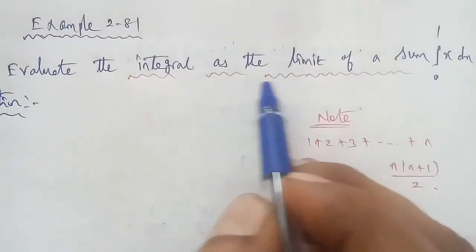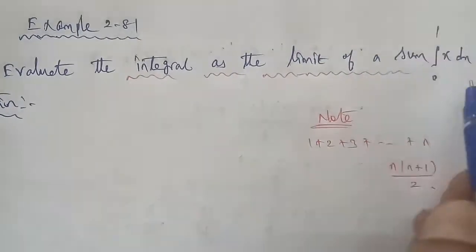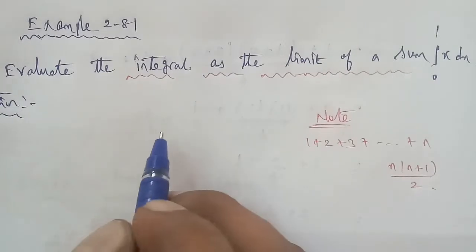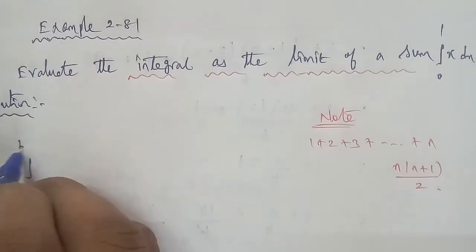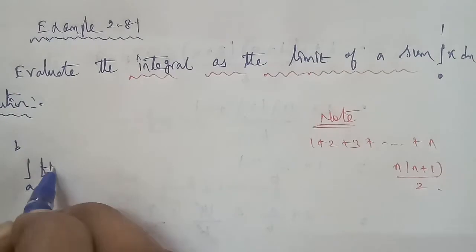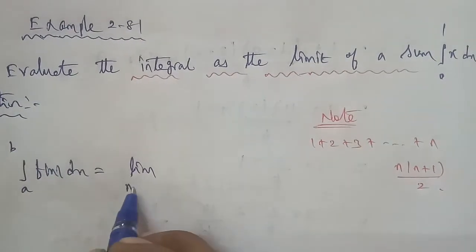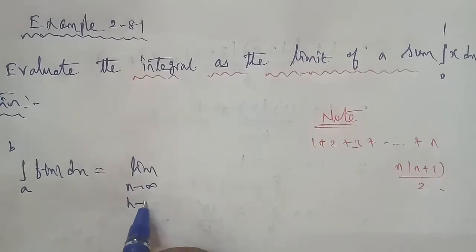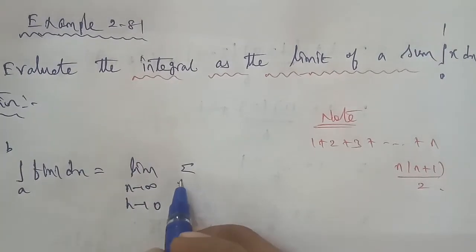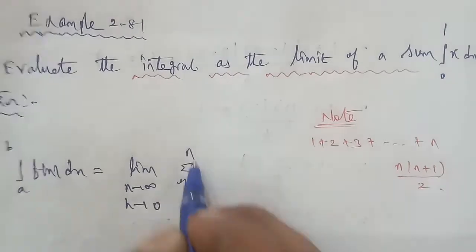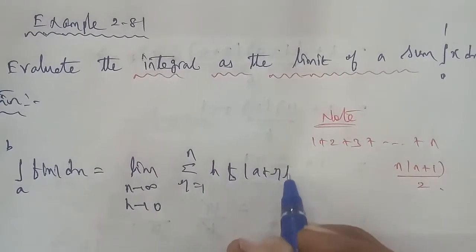So, the question uses the limit of the sum concept. First, you know the formula: integral a to b, f of x dx is equal to limit n to infinity and h to 0, sigma r is equal to 1 to n, h times f of a plus rh.